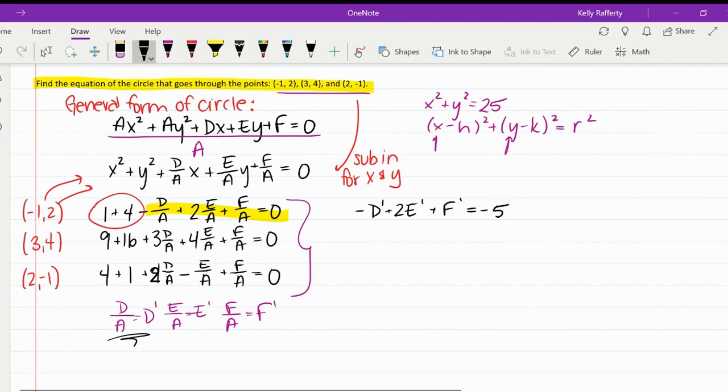Same thing with the second equation: 3D over a, 4E over a, and F over a. My constants here would be 25. And lastly, I'll have 4D over a minus E over a plus F over a equals, this guy would be a negative 5.